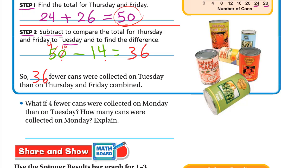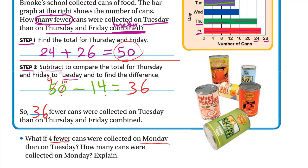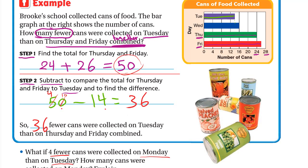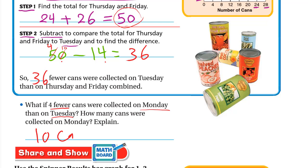What if four fewer cans were collected on Monday than on Tuesday? Monday isn't in the graph. Tuesday is 14, so four fewer means 14 minus 4 equals 10. So 10 cans were collected on Monday.